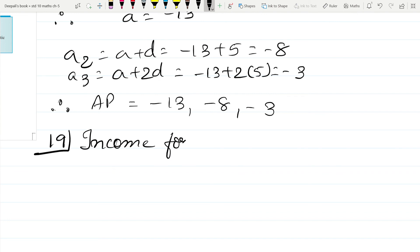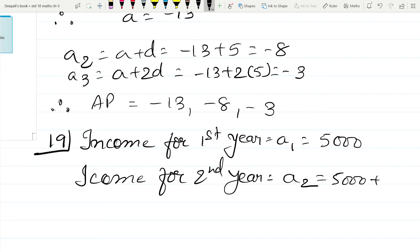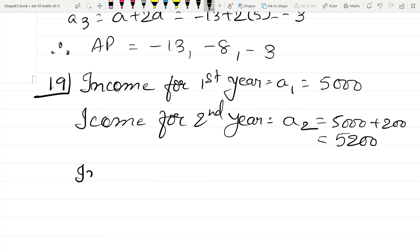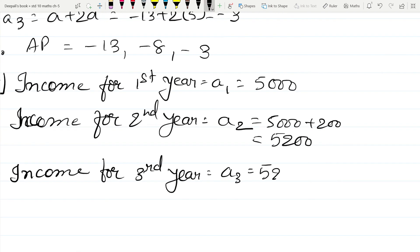Now the income for the first year, that is A1, is 5000. Income for second year, which is A2, is 5000 plus 200, that is 5200. Income for third year is equal to A3 is equal to 5200 plus 200, that is 5400.